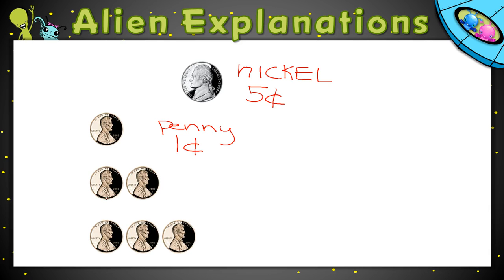So if we have more than one penny, we have one cent, two cents — and we have two cents. If I have three pennies: one, two, three — I have three cents.